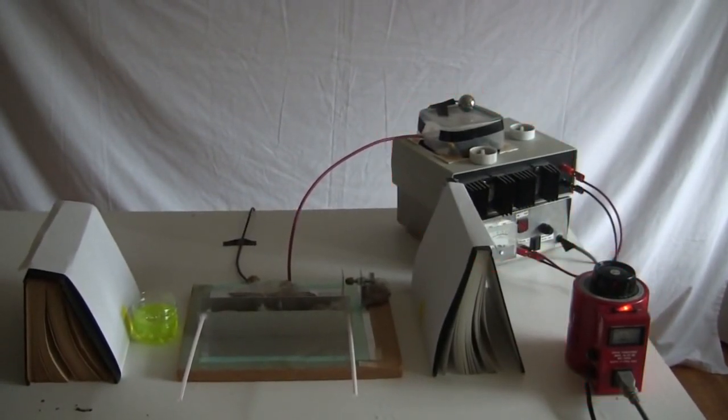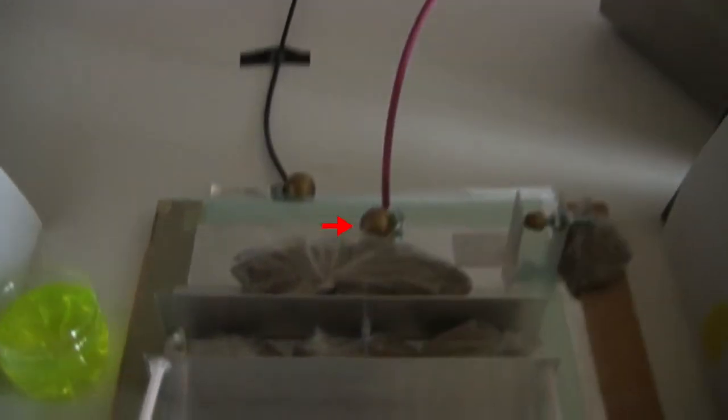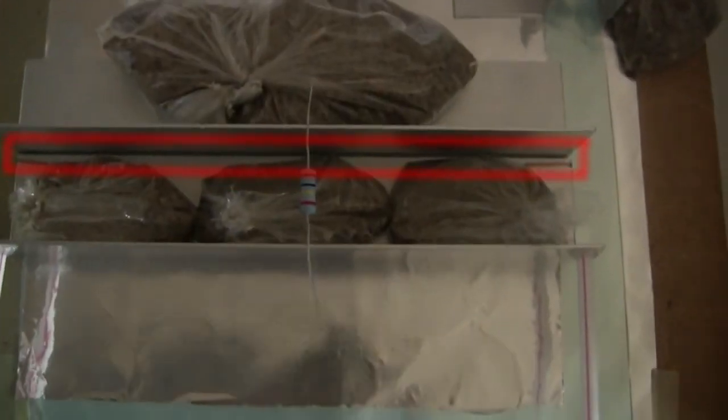This is my homemade high voltage power supply. This ball is connected to earth ground, and this ball is high voltage positive. There's a spark gap here, there's also a very long spark gap here.